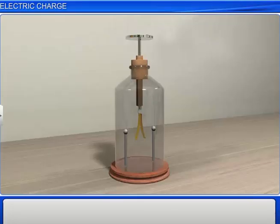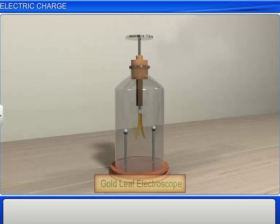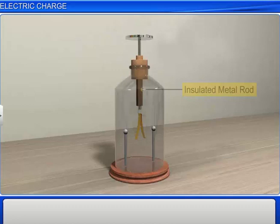To know whether a body has been charged, we use an instrument called a gold leaf electroscope. It consists of an insulated metal rod with two gold leaves or foils at one end and a metal disc at the other end.